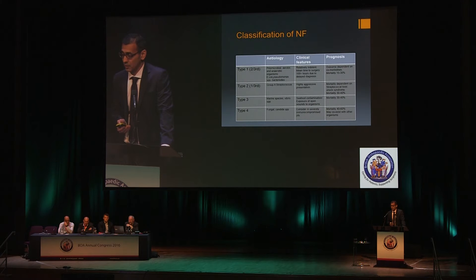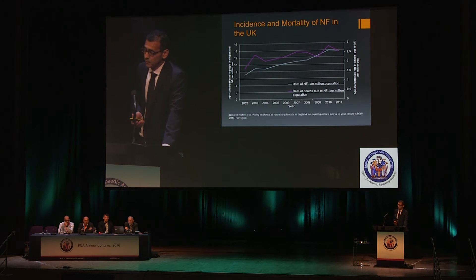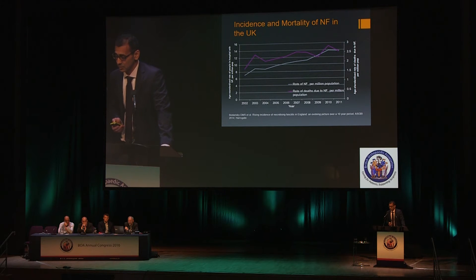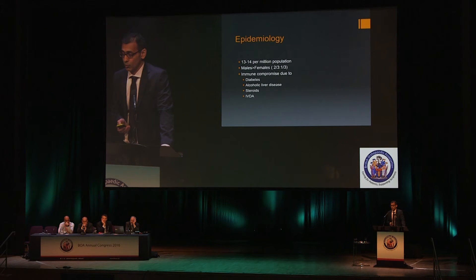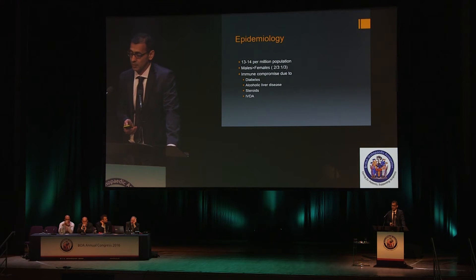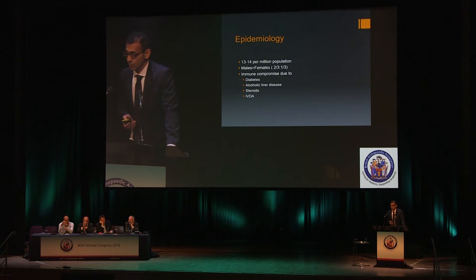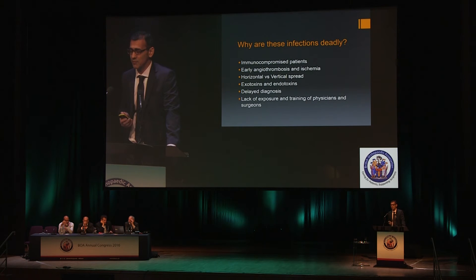Looking at the incidence and mortality of necrotizing fasciitis — it has nearly doubled in the last 10 years, and these are population-adjusted figures, so this is a worrying trend. The rate of mortality is up by a factor of about 1.5. Nearly 13 to 14 per million population will get necrotizing fasciitis in the UK. Males are more common than females, and nearly all will have immunocompromise, though not always due to the listed comorbidities.